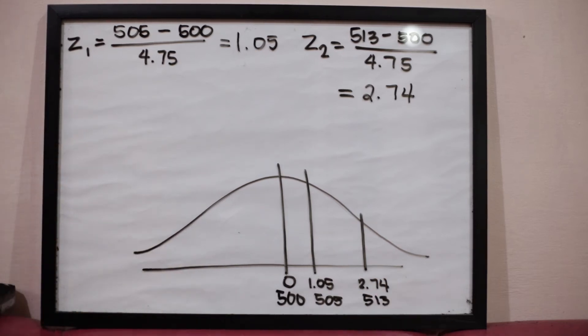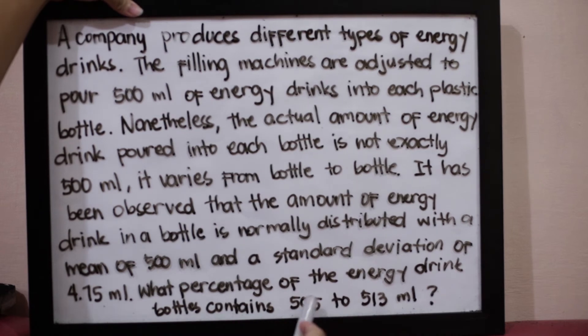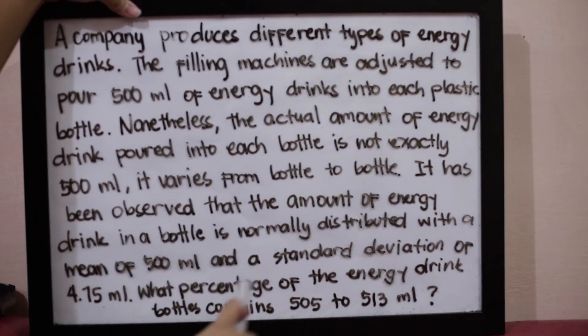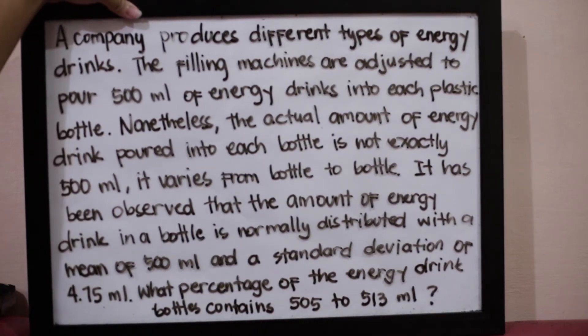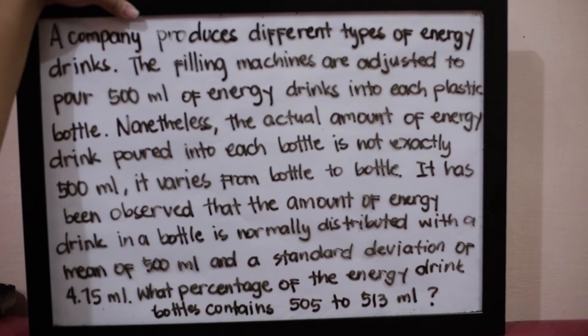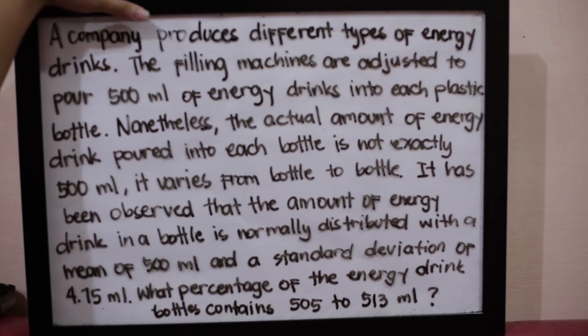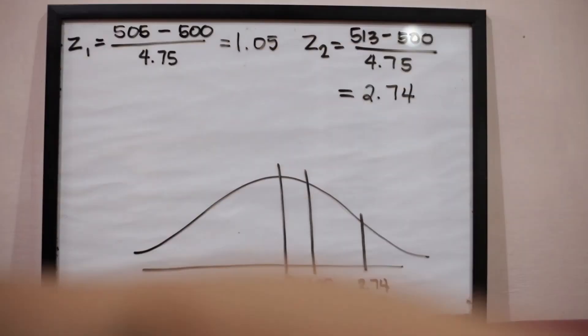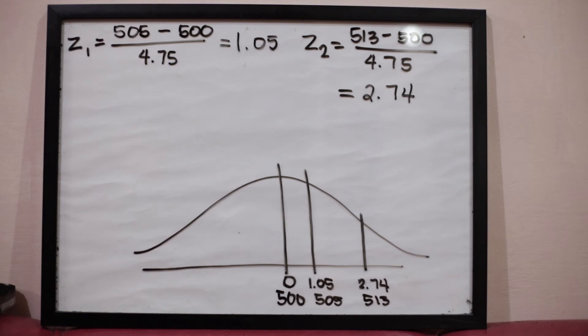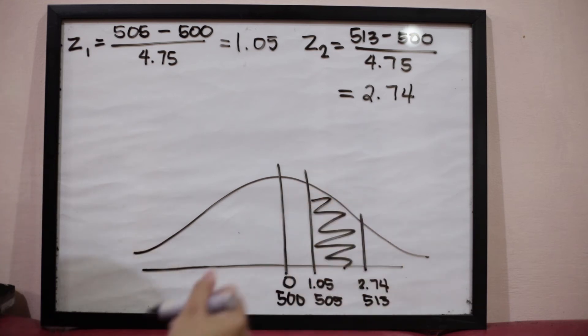After plotting, we identify the shaded region. To identify the shaded region, we go back to the problem. The question is, what percentage of the energy drink bottles contains 505 to 513 ml? From the phrase 505 to 513 ml, it signifies that we have to get the percentage between 505 and 513.